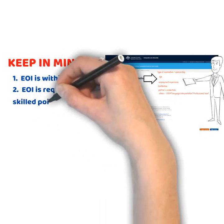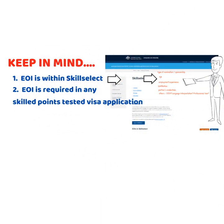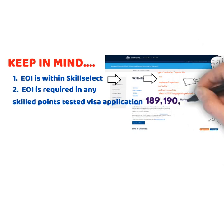Second point: you need to lodge an EOI if you are applying for any skilled visa that is points-tested. You cannot directly lodge a visa application unless you have an invitation. The visas that are points-tested are the Skilled Independent Visa Subclass 189, the Skilled Nomination Visa Subclass 190, the Business Innovation and Investment Visas, and of course, Subclass 491 Skilled Regional Visa.